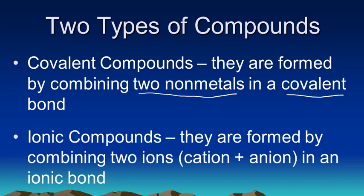The other type of compound is called ionic compounds. These are formed from an ionic bond by combining two ions, a cation and an anion, and usually that involves combining a metal and a nonmetal.